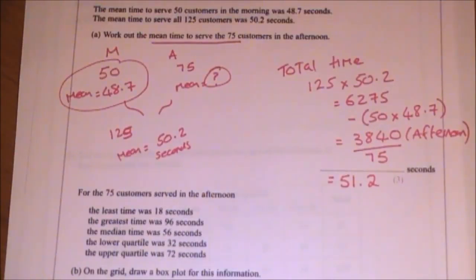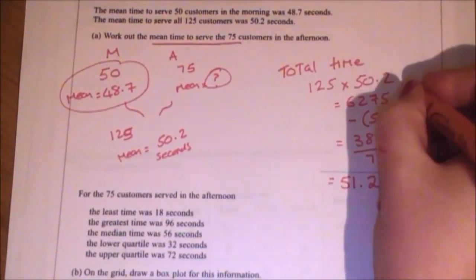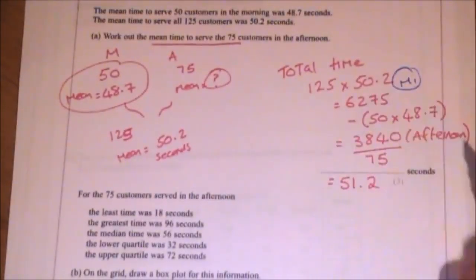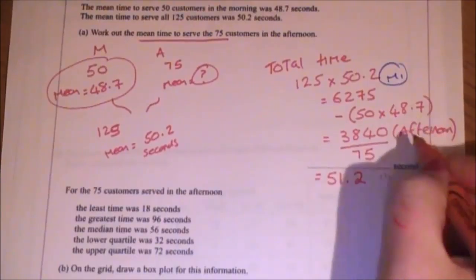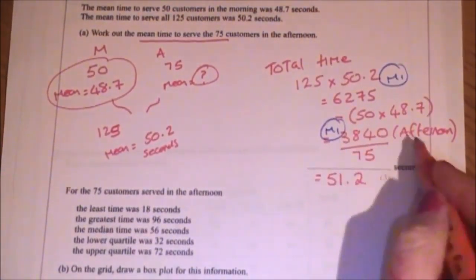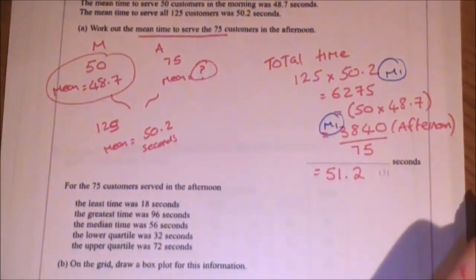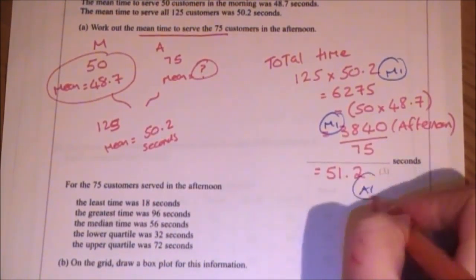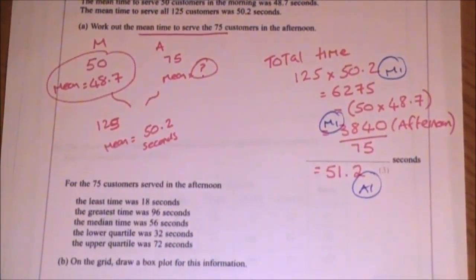With regards to mark allocation, you get one mark for finding the total number of minutes. You get one mark for working out the minutes in total for the afternoon. And then you get an answer mark for getting the final answer.